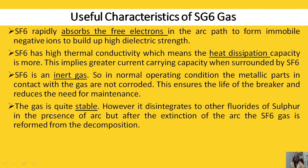One important property: the gas is quite stable. Stable means that whenever an arc forms there is ionization, and when the arc gets extinguished there is a deionization process. Between ionization and deionization the gas gets decomposed — it gets converted into fluoride of sulfur ions. After the arc gets extinguished, it reforms into its original form. So even though it disintegrates to other fluorides of sulfur in the presence of an arc, after extinction the SF6 gas is reformed from the decomposition.